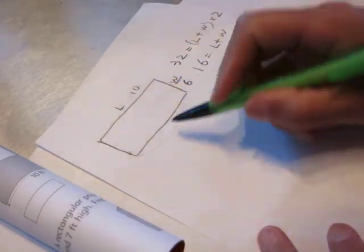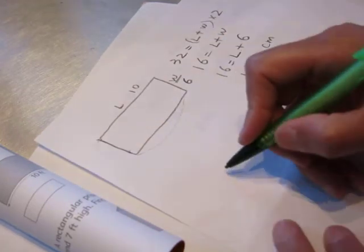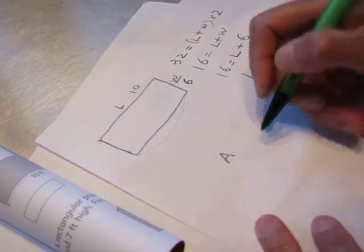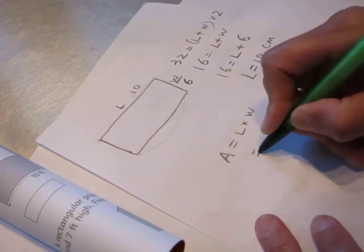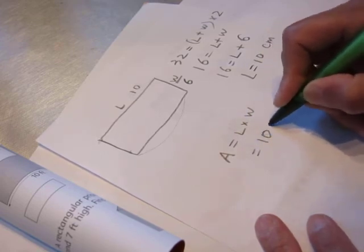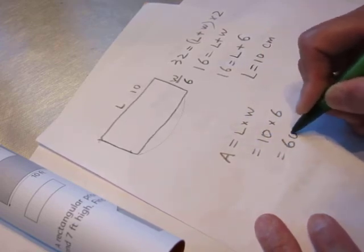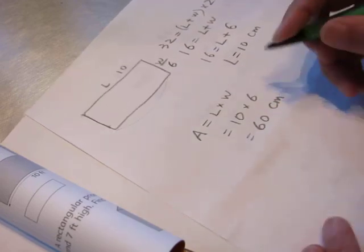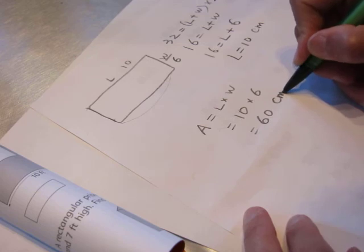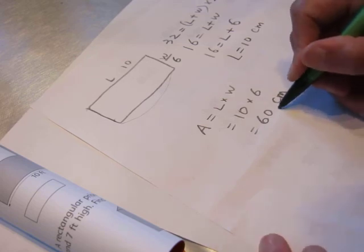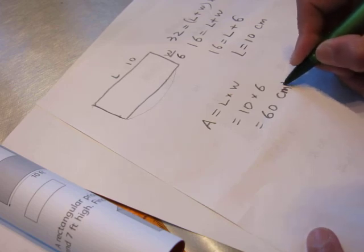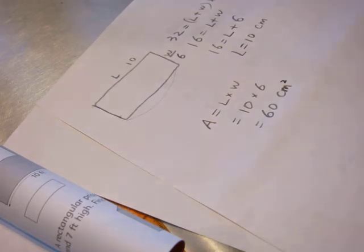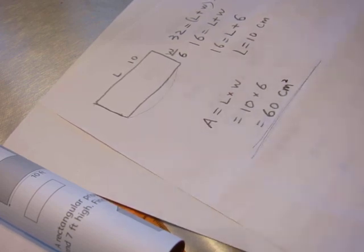我們知道寬是6, 長是10, 那麼我們再算它的面積, 一共有多大的一個平面, 它的面積就等於長乘以寬等於10乘以6等於60. 如果是一條線, 是一個長度, 如果是一個平面, 它的單位是平方厘米, 所以它的面積是60平方厘米, 聽懂了嗎? 再見!